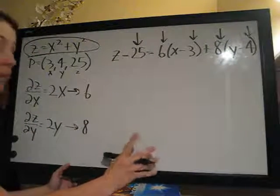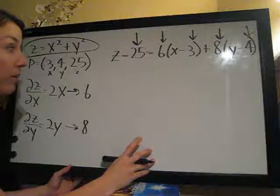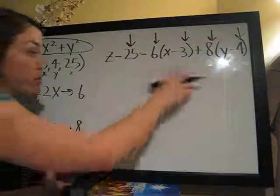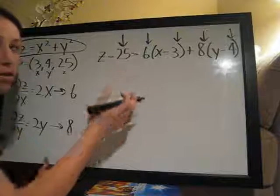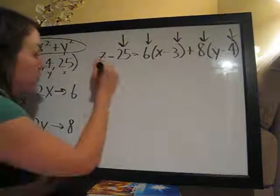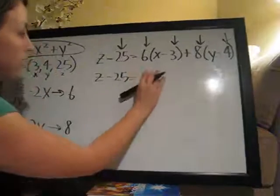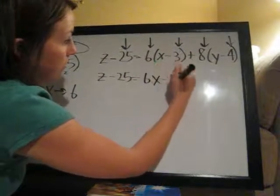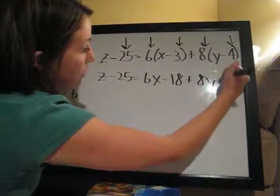So now all we have to do is simplify and solve. Really just simplify. Okay, so we're just going to multiply out. You could either give your answer in this form or you could change it to the following form. I'll show you both. We'll say Z minus 25 equals, and then we're just going to multiply out here. So 6X minus 18 plus 8Y minus 32.